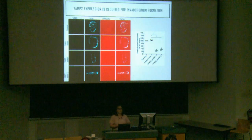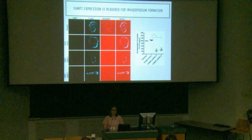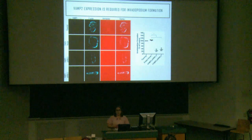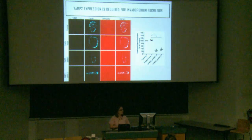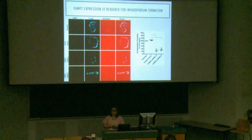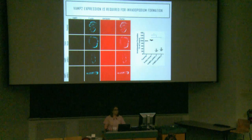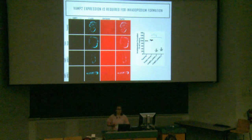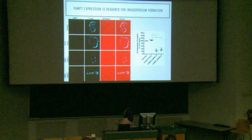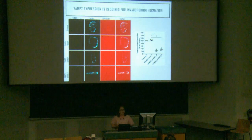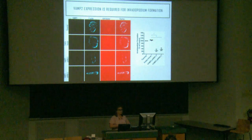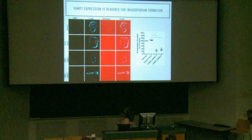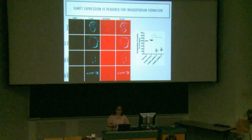We use MDA-MB231 cells, an adenocarcinoma breast cancer cell line, because they form invadipodia in vitro when plated on an ECM-like substance. To see if VAMP-2 expression was required for invadipodia formation, I knocked down VAMP-2 using shRNA and plated these cells onto fluorescent gelatin labeled red. When the cells degrade the gelatin, they leave behind black puncta. We costain cells for an invadipodial marker like F-actin, overlay the images, and quantify invadipodia formation.